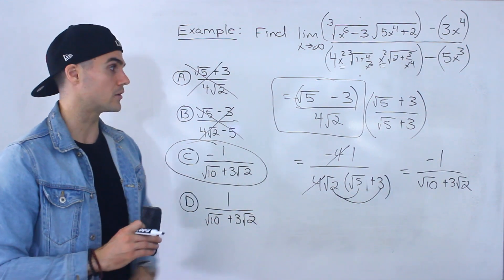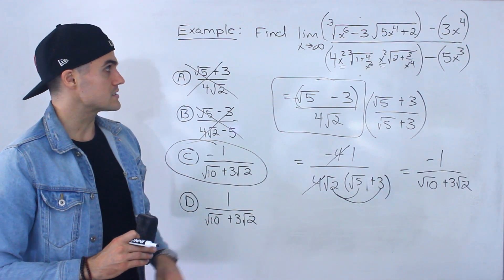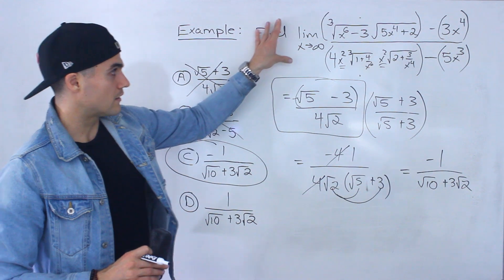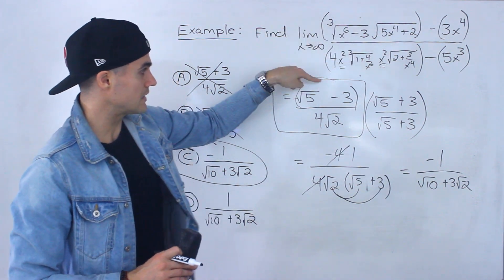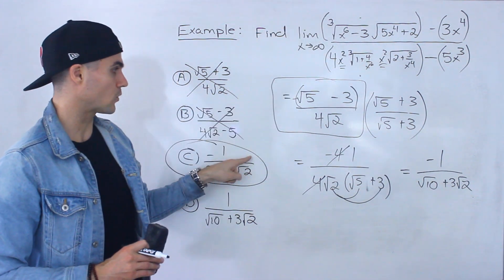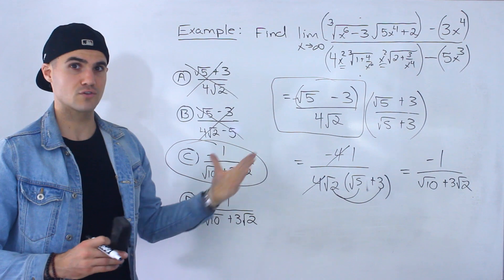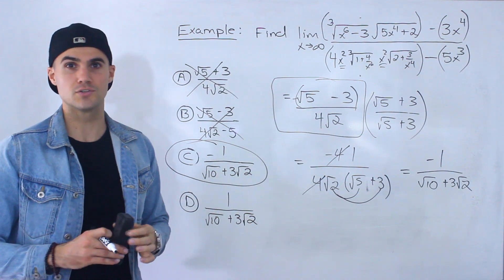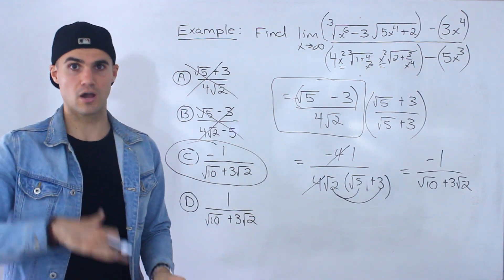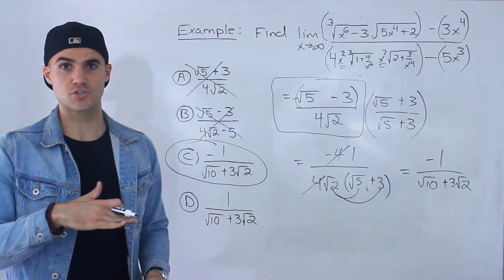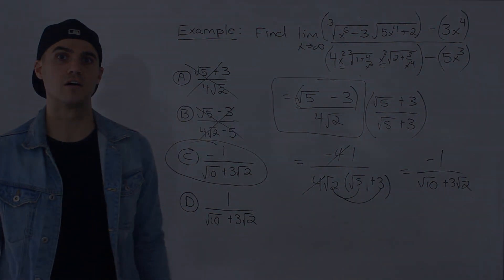That's another trick I wanted to throw in. So the answer to this limit is root five minus three over four root two, or equivalently negative one over root ten plus three root two — both are the same thing, that's answer C. If you haven't watched the lecture videos, I highly recommend you do. I go over a bunch of examples and videos, starting with the fundamentals.